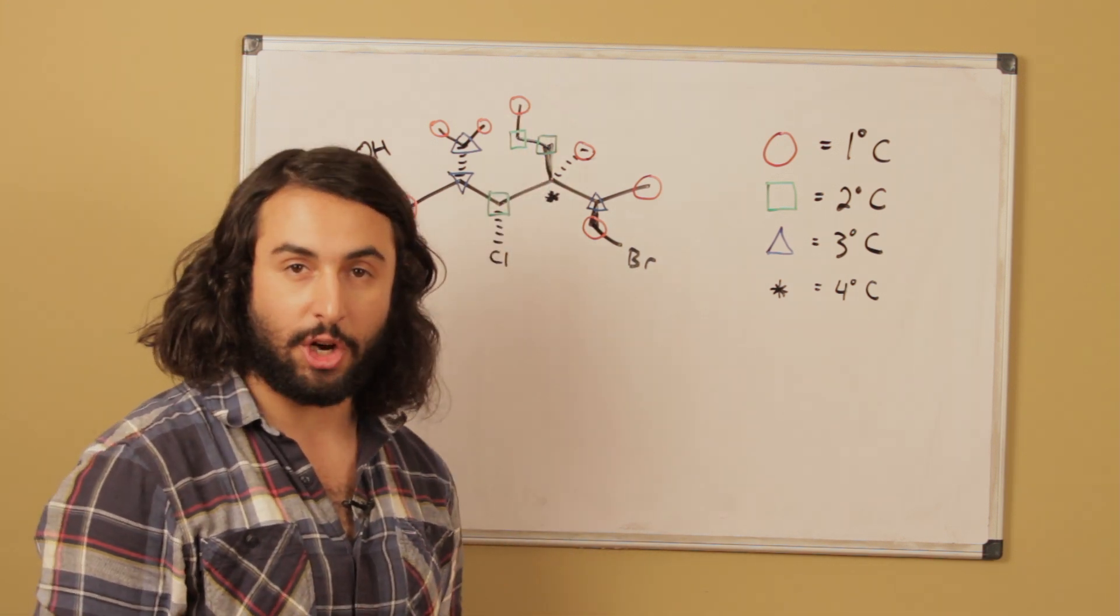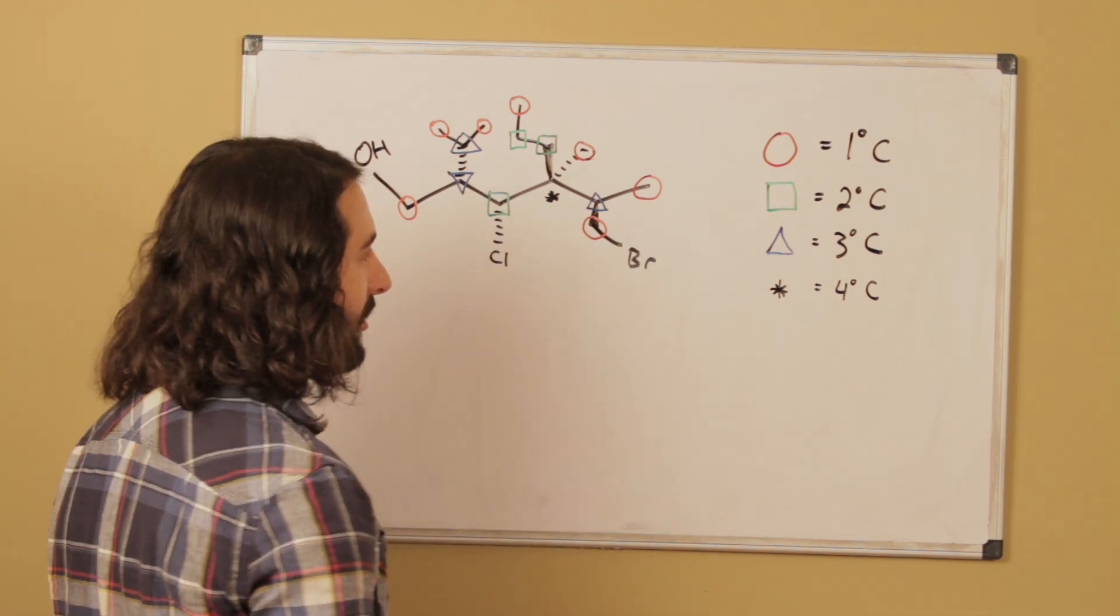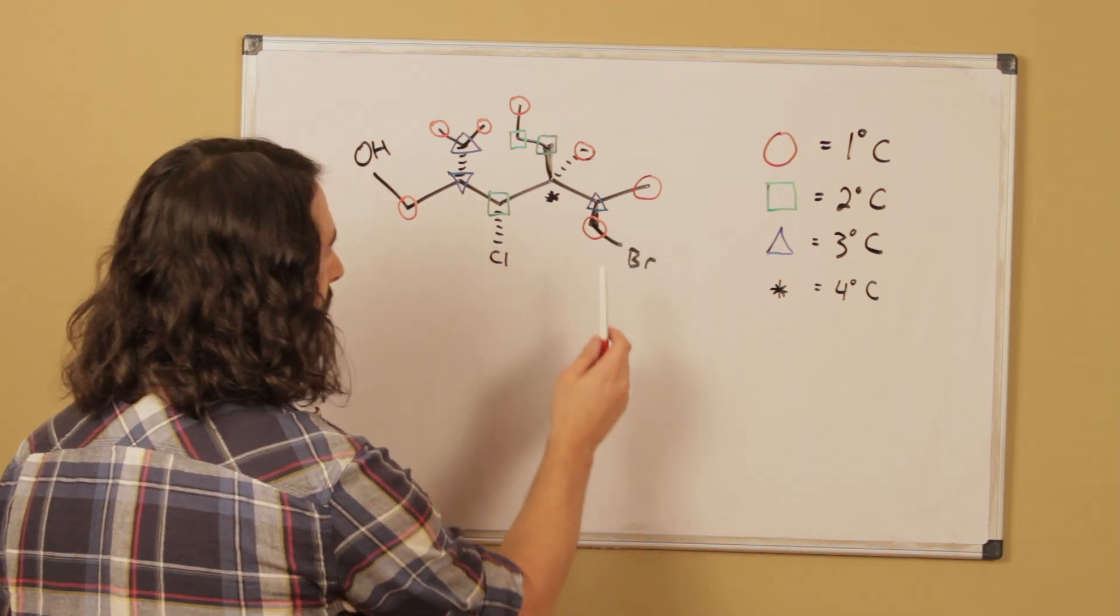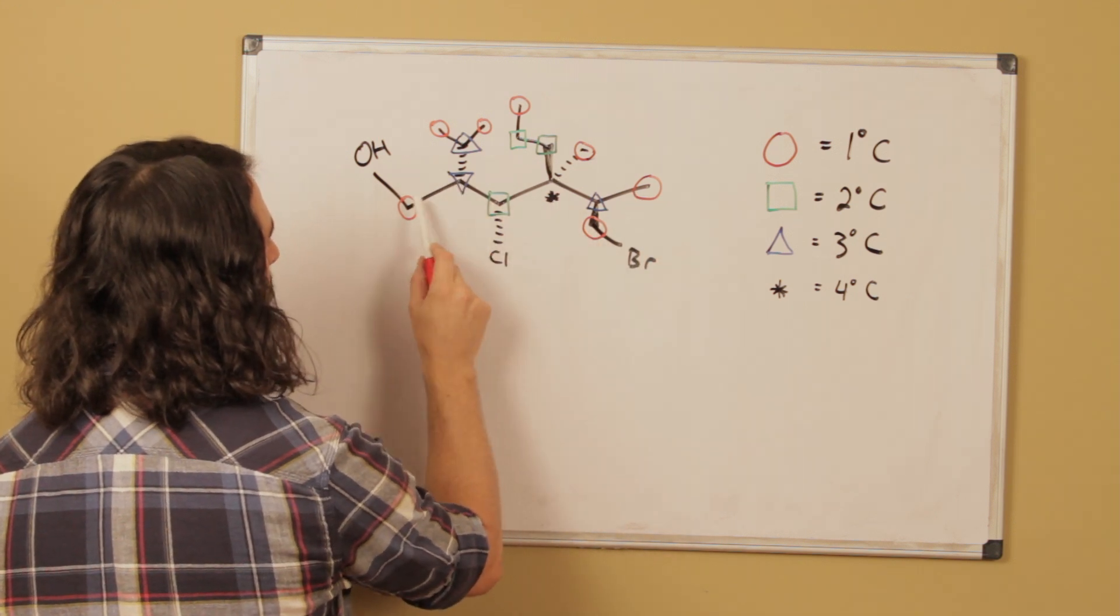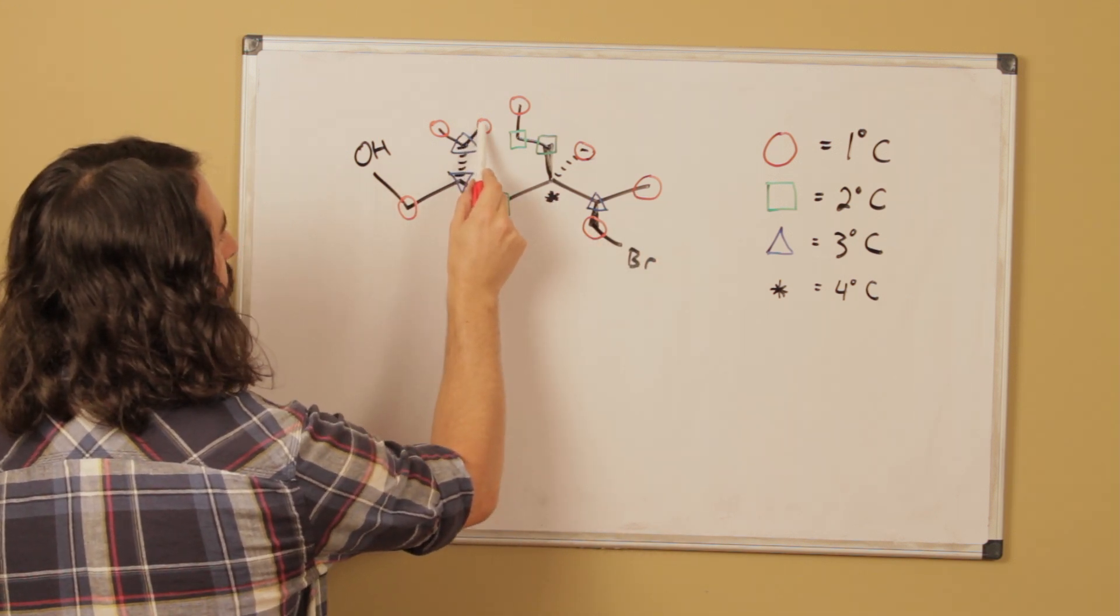Then the tertiary carbons are going to be connected to three other carbons, so this guy is connected to one, two, three; this guy is connected to one, two, three; this guy is connected to one, two, three - so those are the three tertiary carbons on the molecule.